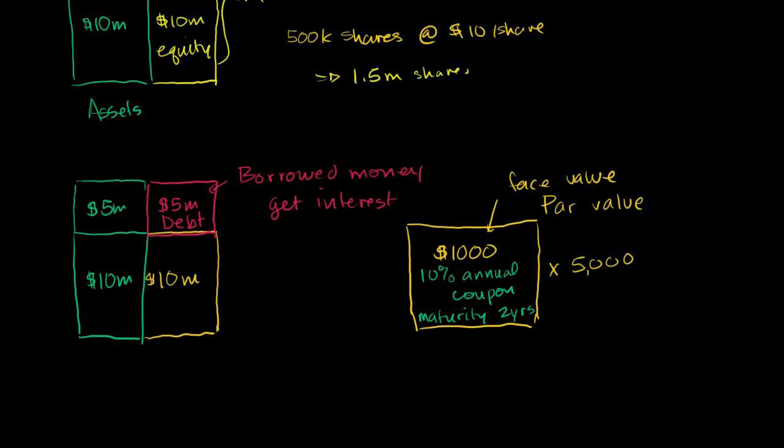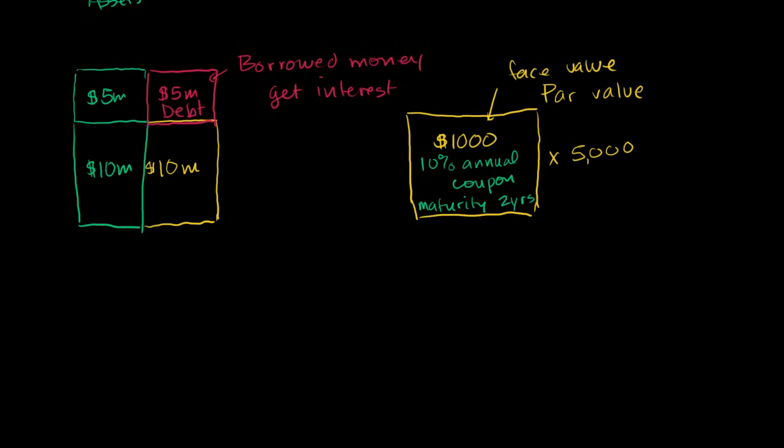Now just to be clear how the actual payments work, the coupons tend to get paid semi-annually. So let me draw a little timeline here. And this tends to be the case in the US and Western Europe. If this is today, this is in 6 months, this is in 12 months or 1 year, this is in 18 months, and this is in 24 months.